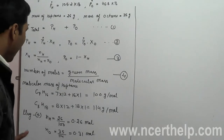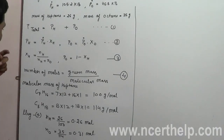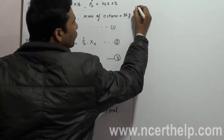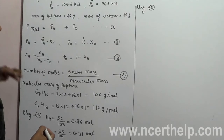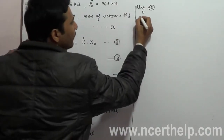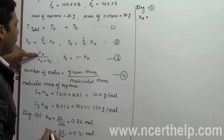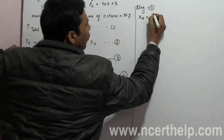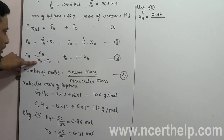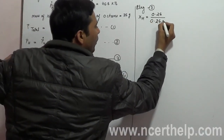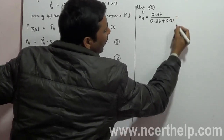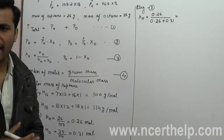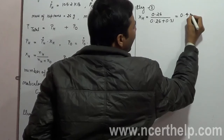Now plug these values into equation three to find molar fractions. Molar fraction of heptane equals 0.26 divided by (0.26 plus 0.31). After calculation we get 0.456.